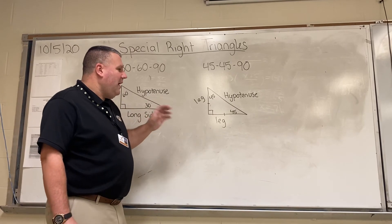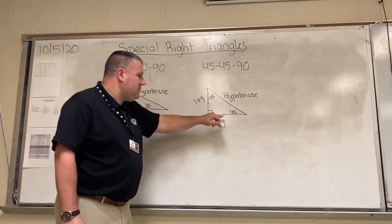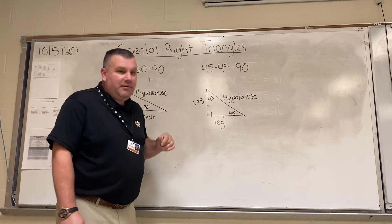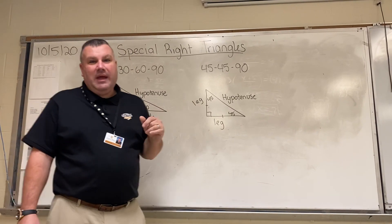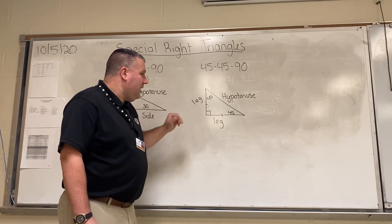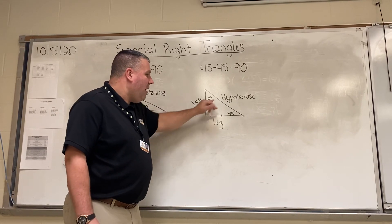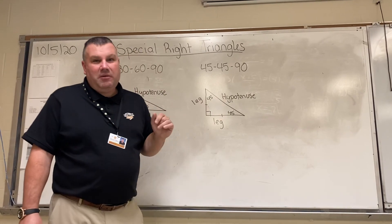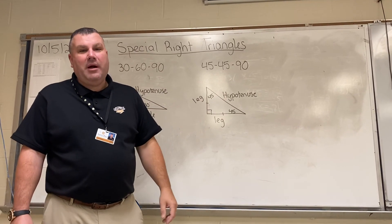So in a 45-45-90 triangle, the sides opposite the 45-degree angles are the legs, and the side opposite the 90-degree angle is the hypotenuse.